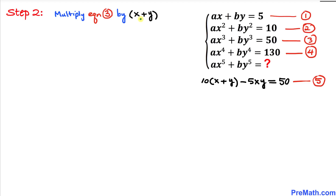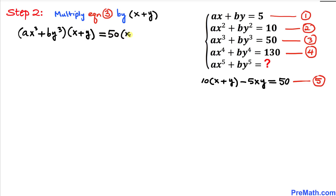In the next step, let's multiply both sides of equation 3 by (x + y). So we write ax³ + by³ times (x + y) equals 50 times (x + y). Now let's multiply these two binomials using double distribution, the rainbow method.